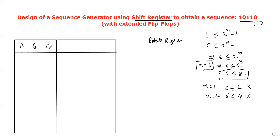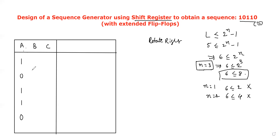Place the three flip-flop outputs A, B, C in the table. Now write the given input sequence under A before applying the rotate-right-shift operation. Now apply the rotate-right-shift operation.